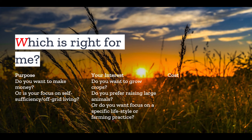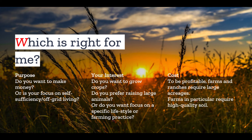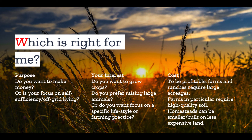How much are you able to pay for the property? To be profitable, farms and ranches usually require somewhat substantial acreages — per the USDA the average size of a farm is about 445 acres. Farms in particular tend to require high-quality soil, and prime farmland can come with a fairly hefty price. High-performing ranches can also be very expensive, although ranch land on average may be a little less than farmland used to raise crops. On the other end of the scale, homesteads can be more affordable, primarily because they are smaller, but also because homesteaders can be a little more flexible and may be able to make their enterprise work on less expensive land.